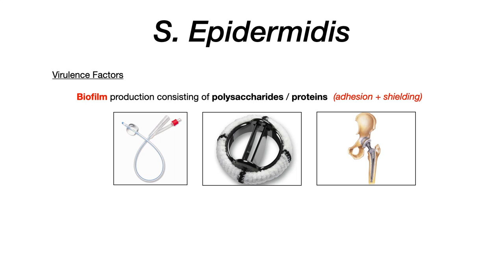Staph epidermidis really has just one virulence factor and it's very high yield, so we only need to focus on one thing — unlike Staph aureus, which had five. For Staph epidermidis, you need to know that its major virulence factor is that it creates a biofilm. This biofilm consists of both polysaccharides and proteins — it's essentially a sticky material that helps Staph epidermidis with two things.